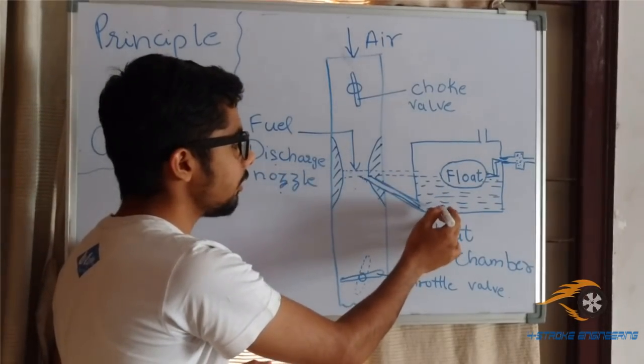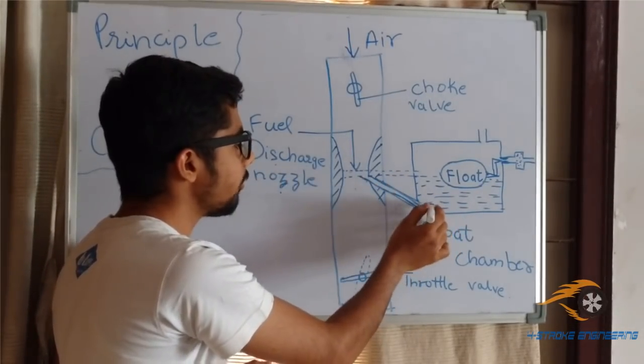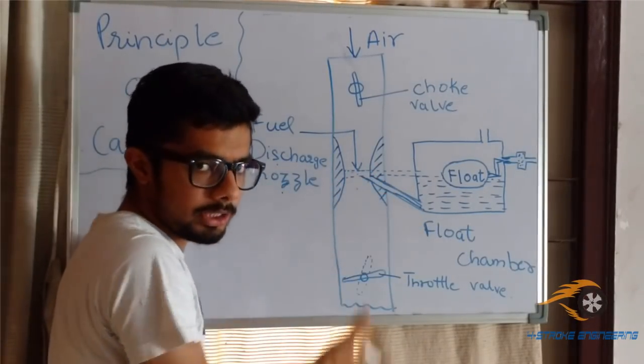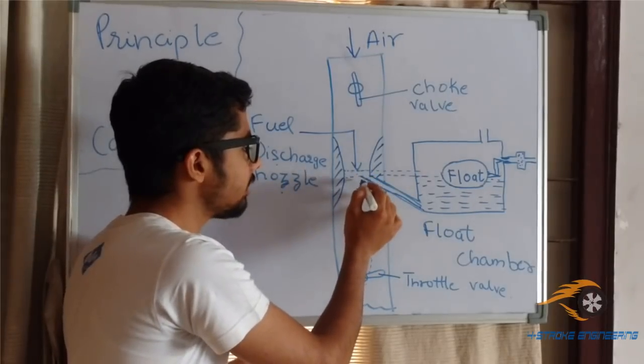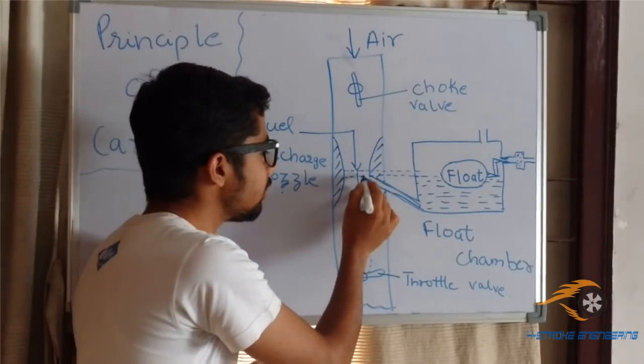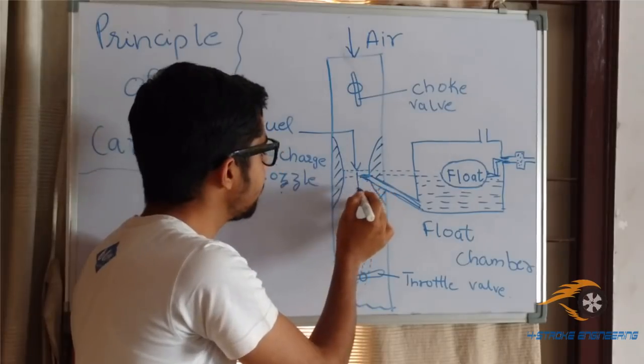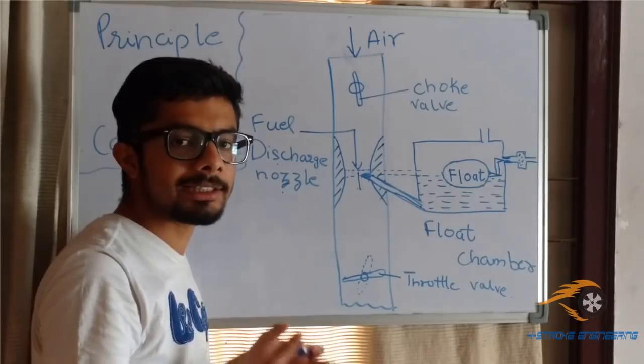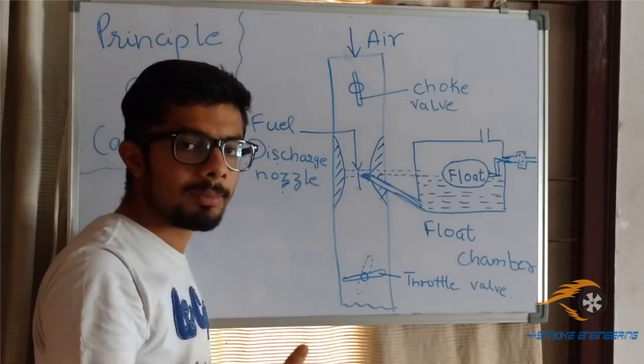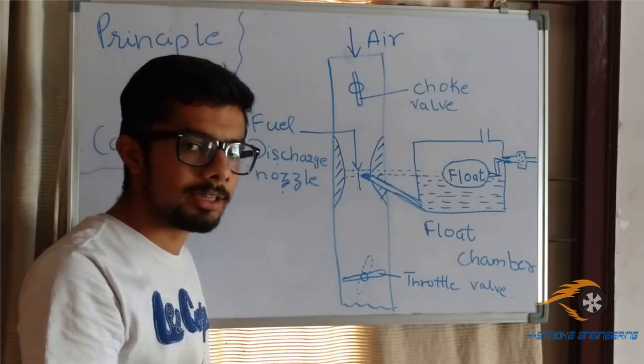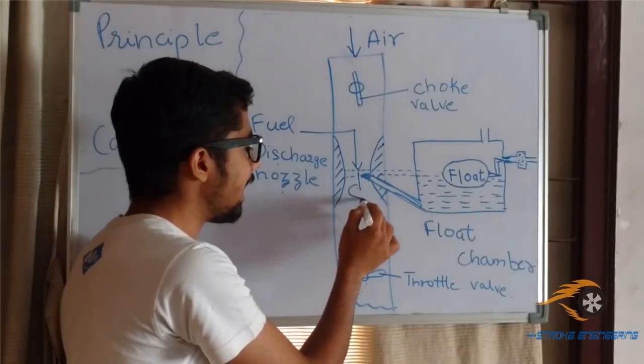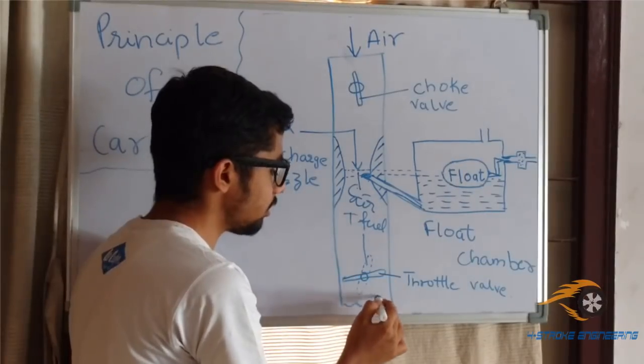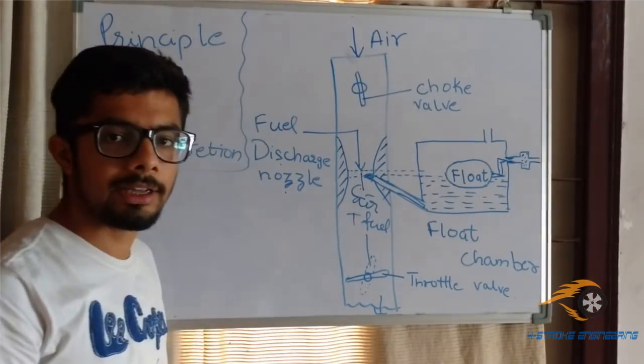From the float chamber, the fuel is sucked in the venturi through the suction pressure by the velocity of air. As the fuel is sucked, the air and fuel get mixed as the cross-section area of this nozzle is very low. As a result, the fuel droplets get atomized and the atomized fuel gets mixed with the air. The mixture of this air plus fuel then passes through the cylinder and combustion chamber.